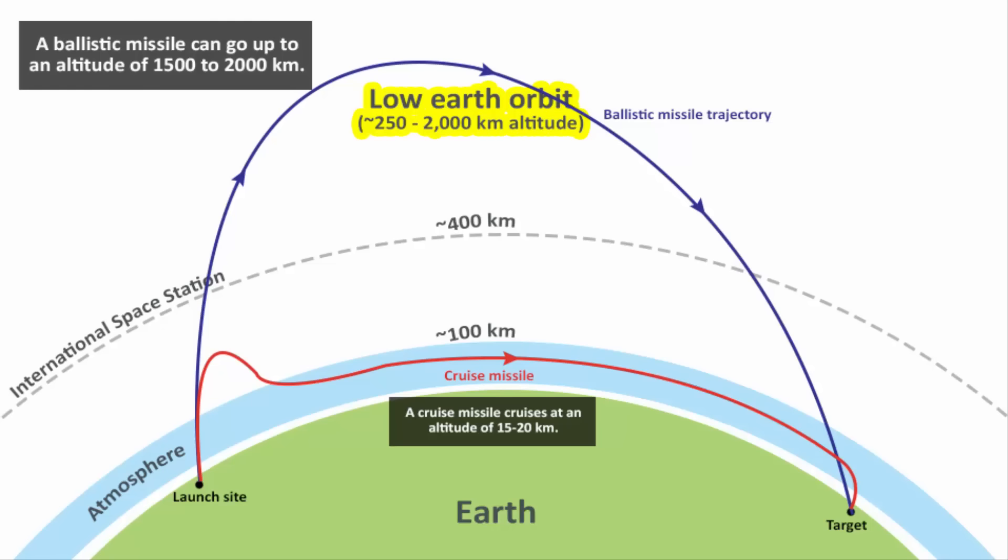Now, ballistic missiles don't have an option of cruising. The International Space Station is located at an altitude of around 400 km. A ballistic missile goes even higher than the ISS. But a cruise missile's altitude is lower than the ISS.